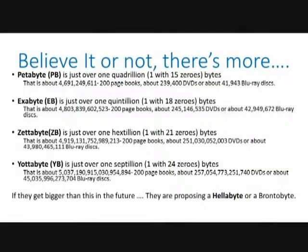Then after that we have what's called a zettabyte. A zettabyte is just over one sextillion — that's a one with 21 zeros — really, really huge. To put that into perspective, you would have over a trillion DVDs. Then after that we go to yottabytes. A yottabyte would be five quintillion books, 257 trillion DVDs, or 45 trillion Blu-ray discs, and that's the biggest one they've measured so far. If they have to go beyond that, some cool names proposed for the next ones are a hellabyte or a brontobyte — they used the bronto term because of the huge dinosaur.